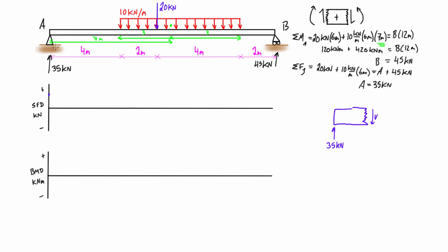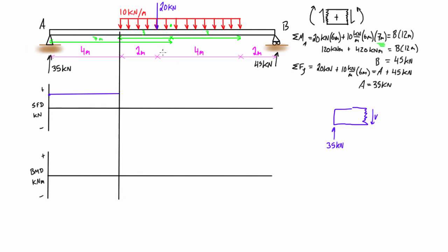The shear is not going to change in this region because there's no distributed load here, so it's going to carry straight across. We should draw markers at each point of interest where we're getting some notable change. Let's draw those a bit thinner.